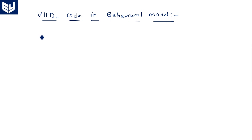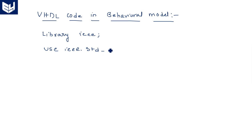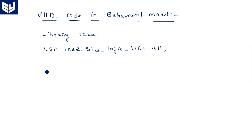Now let us write the VHDL code in behavioral model. We start with library IEEE, and use the package IEEE.STD_LOGIC_1164.ALL. This package includes all the gate types and everything required for the program.